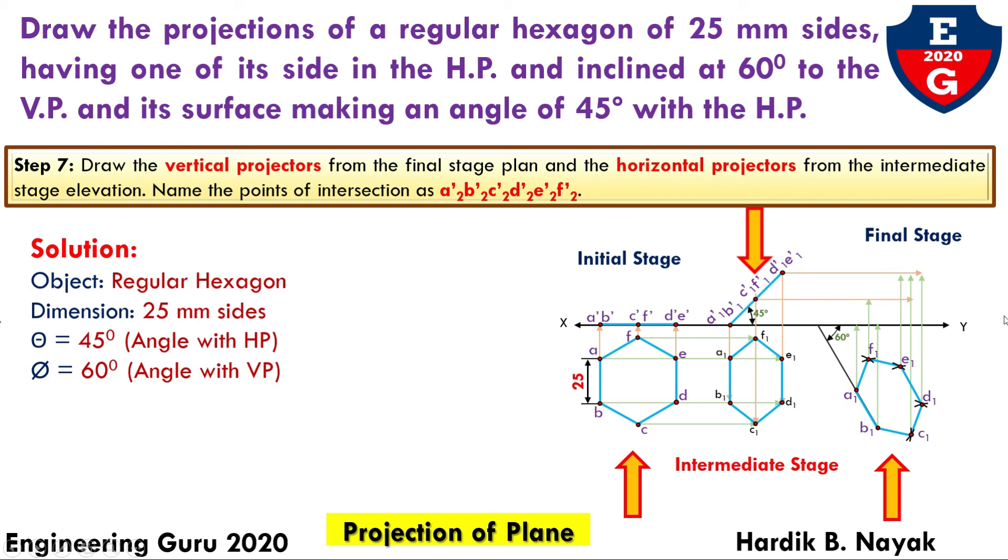Name the intersection points as A2 dash, B2 dash, C2 dash, D2 dash, E2 dash, F2 dash, and join all the points with lines.